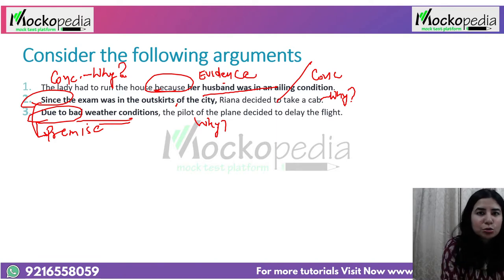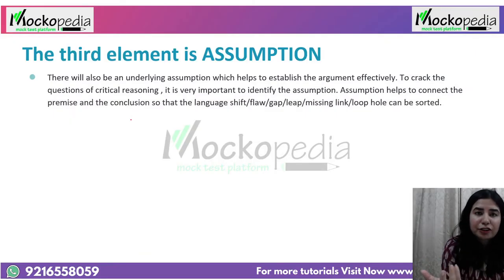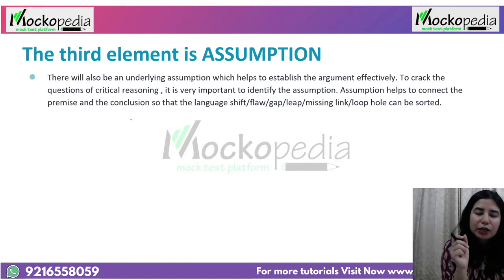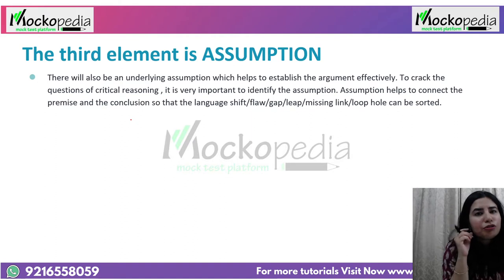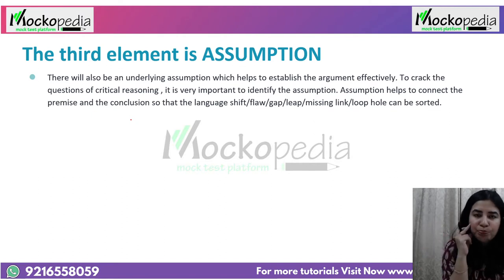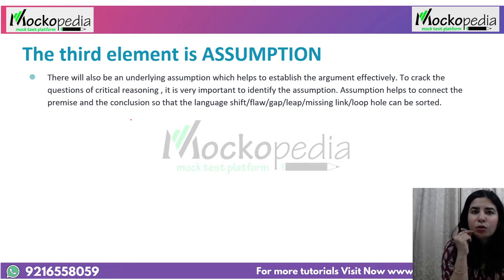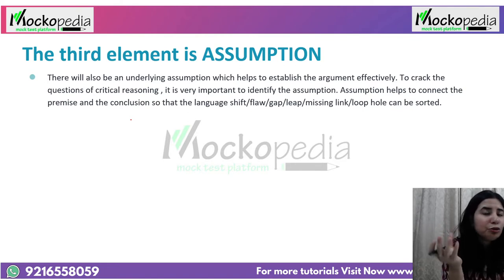Once we are clear with conclusion and evidence, let's look at the third part of an argument: assumption — the most interesting part. When drawing a conclusion, it is not always necessary that all aspects are taken into consideration. For instance: 'A student was in IIT and that is the reason he got the placement.' What about intelligence quotient, aptitude exams, CGPA, performance, interview? We have not talked about these factors.